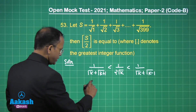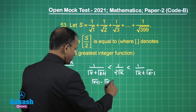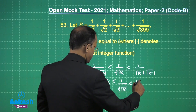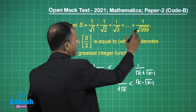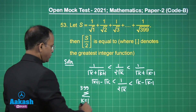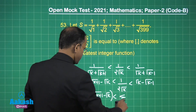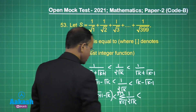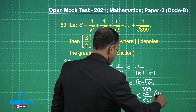We rationalize: multiplying numerator and denominator we get √(k+1) - √k. So we have √(k+1) - √k < 1/(2√k) < √k - √(k-1). Taking summation from k=1 to 399 on both sides, this telescopes.